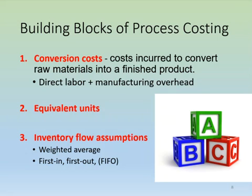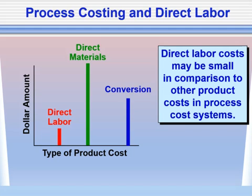When we talk about conversion costs, we are calling those our direct labor plus manufacturing overhead. We're taking the raw materials and adding these conversion costs to convert the raw materials into a finished product. Conversion costs are direct labor plus manufacturing overhead, and they are usually but not always incurred evenly throughout the production process.